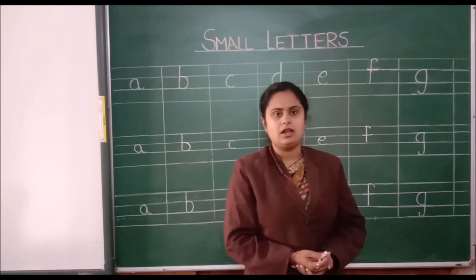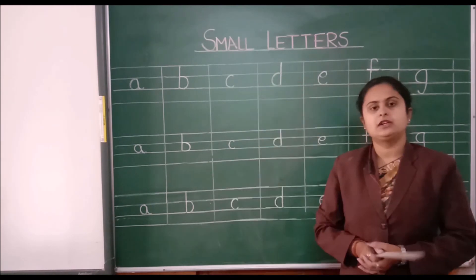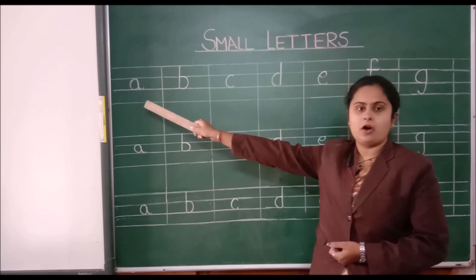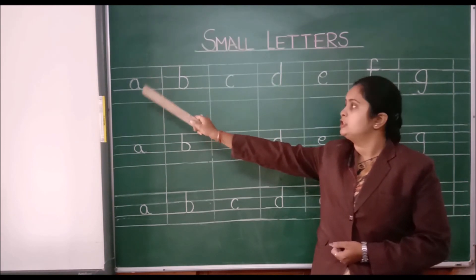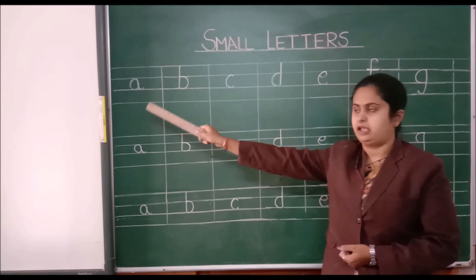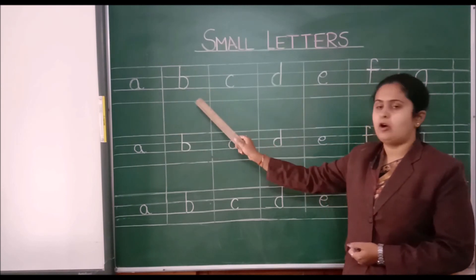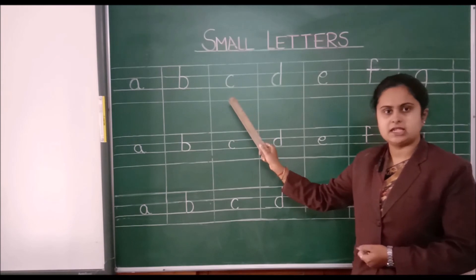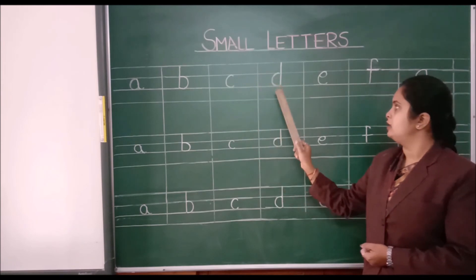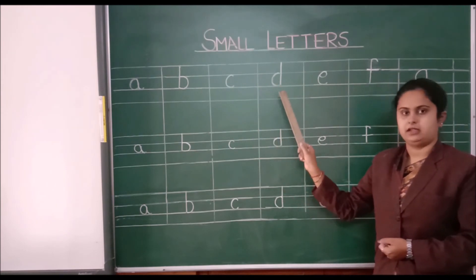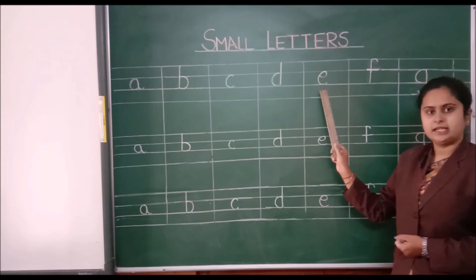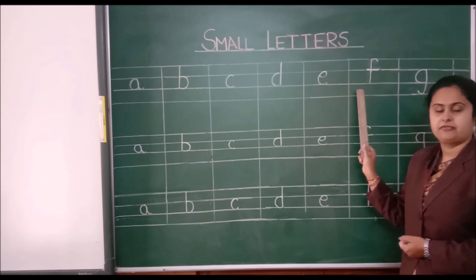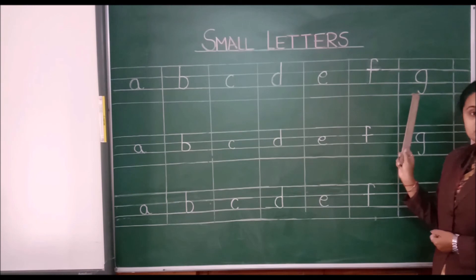Now children, let's repeat. This is small letter A, small letter B, small letter C, small letter D, small letter E, small letter F, and small letter G.